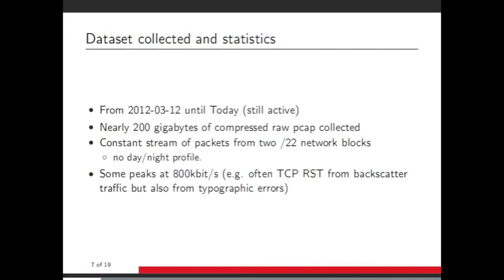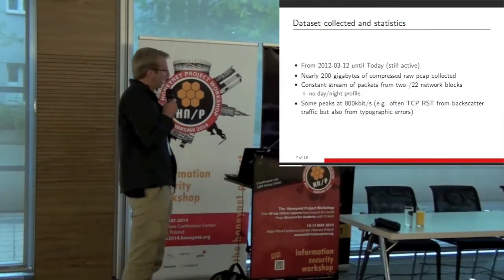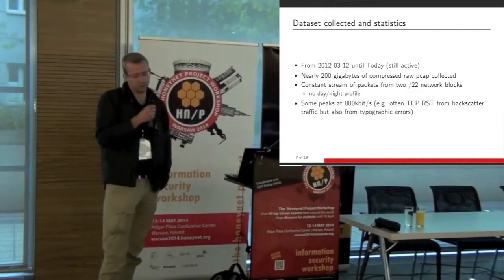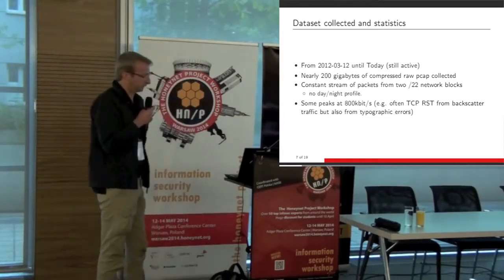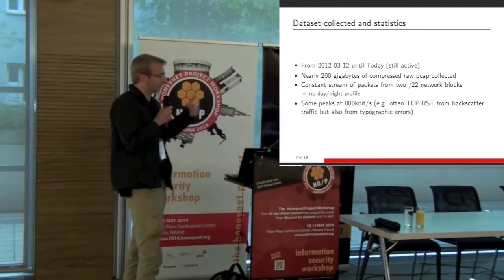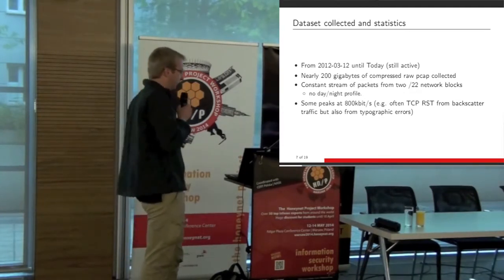What kind of data did we collect? We started collection in March 2012 and it's still operating. Until now we've collected more than 200 gigabytes of compressed packet capture files coming from two /22 network blocks that are very close to the RFC 1918 address space. A general comment: we don't see any day/night profile that you see regularly in some honeypots or collections. Here it's basically a flat profile with some peaks. Sometimes we get peaks traditional for black holes, like TCP resets from backscatter, but we see a lot of peaks due to typographic errors — and that's the interesting part.